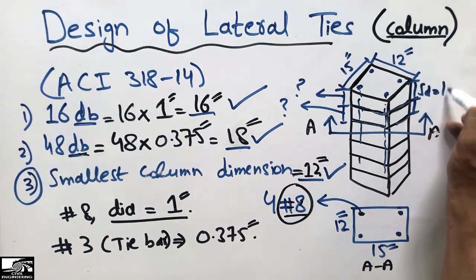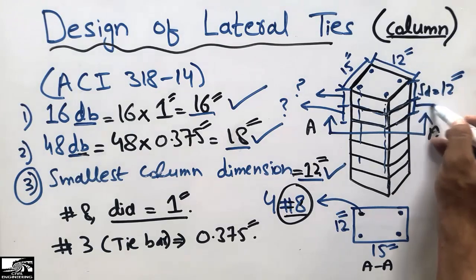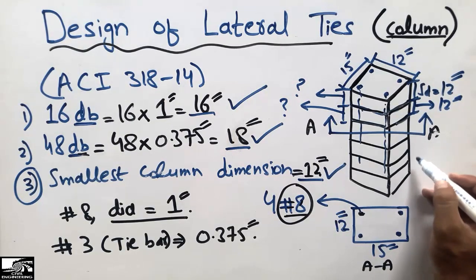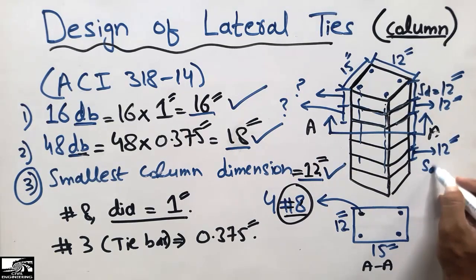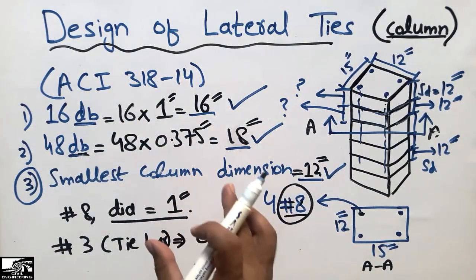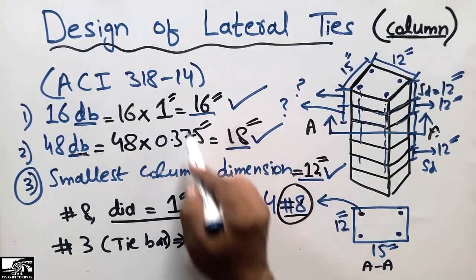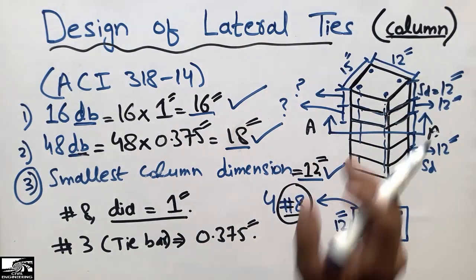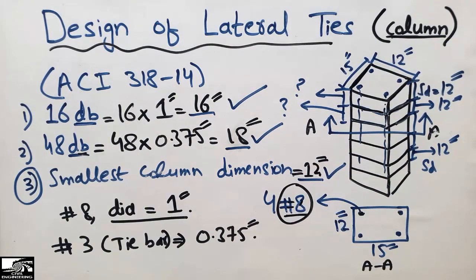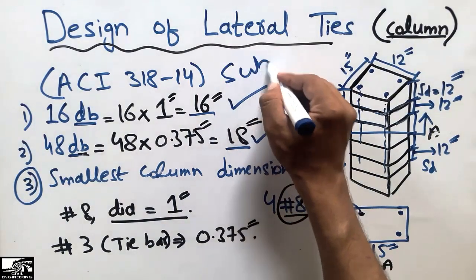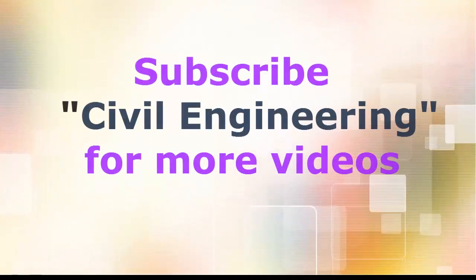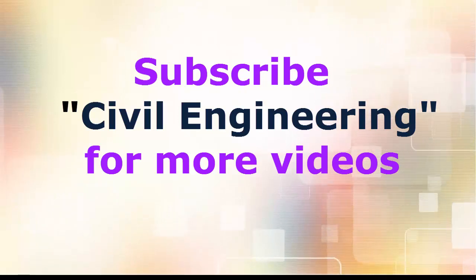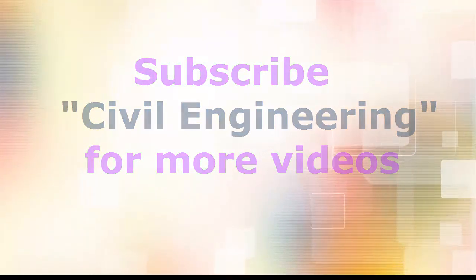Our design spacing is 12 inches. This is the rule for how to design lateral ties for a column: the distance between two lateral ties will be 12 inches. According to ACI 318-14, the least of the three formula values should be taken as the design spacing. Hope you understand — subscribe to our channel for daily engineering videos. Thank you for watching. We'll see you next time.